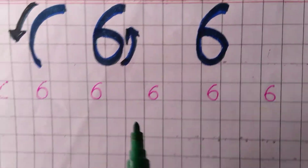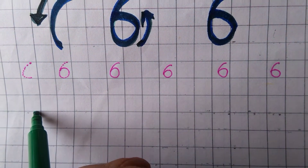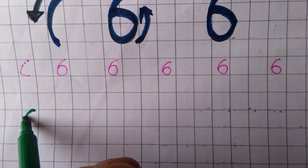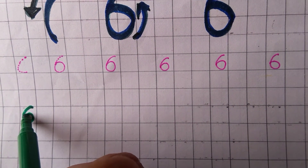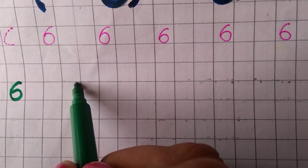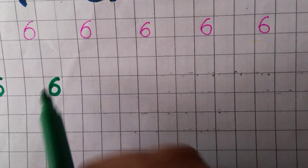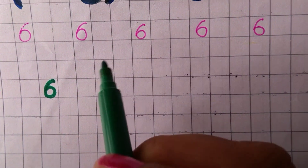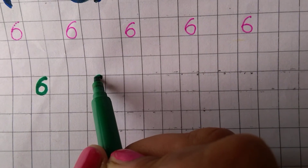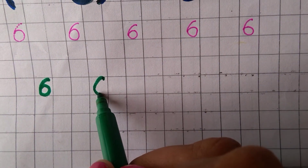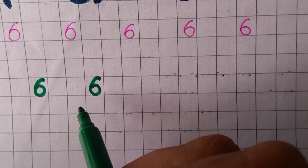Let us start writing with steps: curve and a circle, 6. Curve and circle, number 6. Or we can say slanting line, circle, 6.